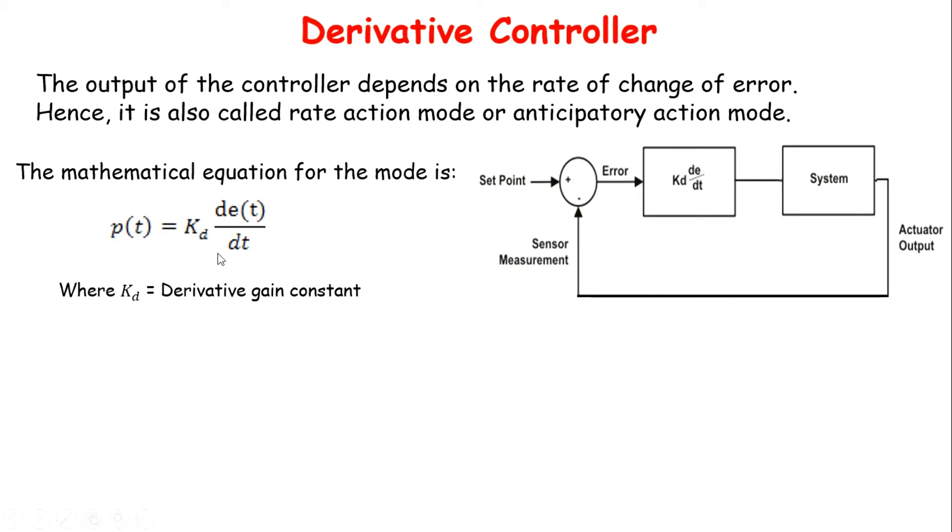Where kd is the derivative gain constant. The gain tells by how much percent to change the controller output for every percent per second rate of change of error.